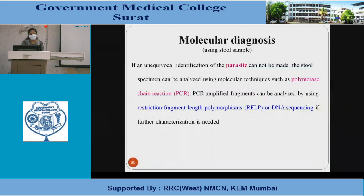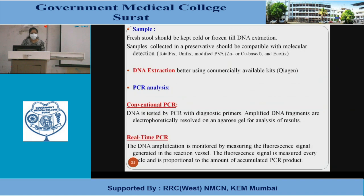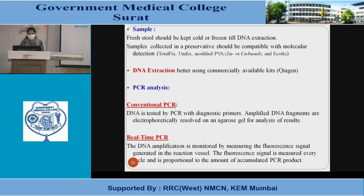In molecular diagnosis using stool samples, if unequivocal identification of the parasite cannot be made, the stool specimen can be analysed using molecular techniques such as PCR. PCR-amplified fragments can be analysed by RFLP (restriction fragment length polymorphism) or DNA sequencing if further characterization is needed. Fresh stool should be kept cold or frozen until DNA extraction. DNA extraction is better using commercially available kits. Both conventional PCR and real-time PCR are used. In conventional PCR, DNA is amplified and resolved on an agarose gel. In real-time PCR, DNA amplification is monitored by measuring fluorescence signals, which are proportional to the accumulated PCR product.